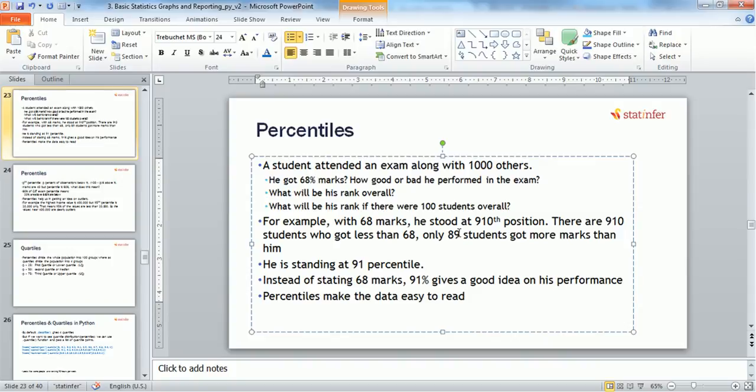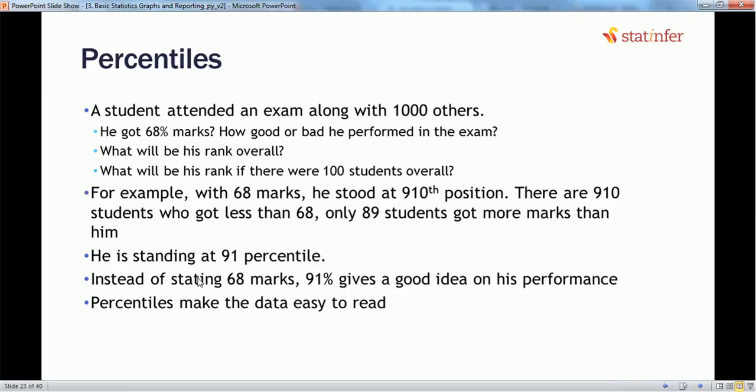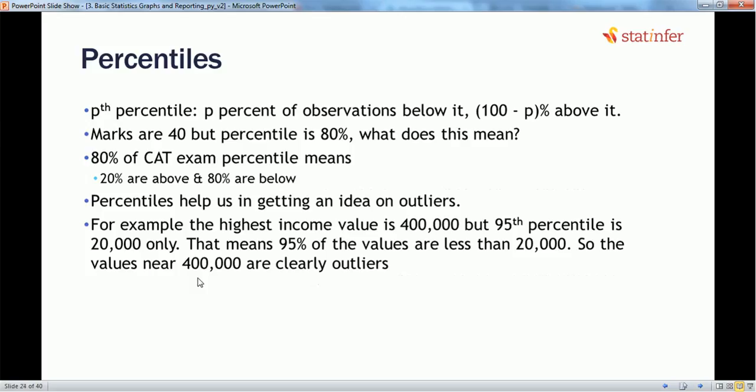So out of 1000, only 89 students are above him, so he is standing at 91 percentile. Instead of just stating 68% marks, 91% percentile gives us a good idea of his performance. Percentile makes the data distribution easy to read.